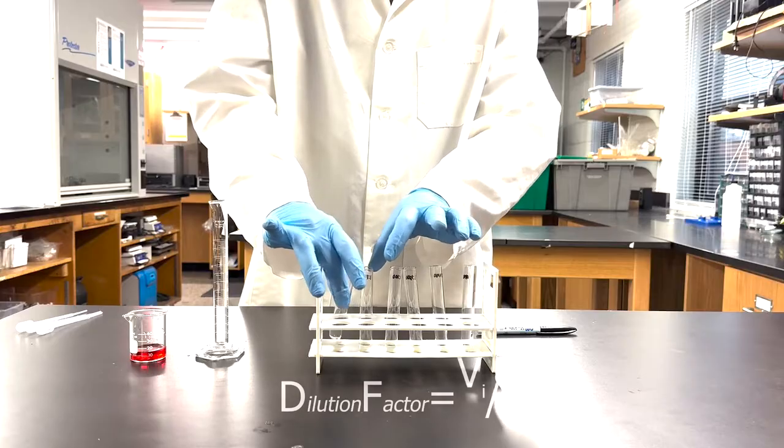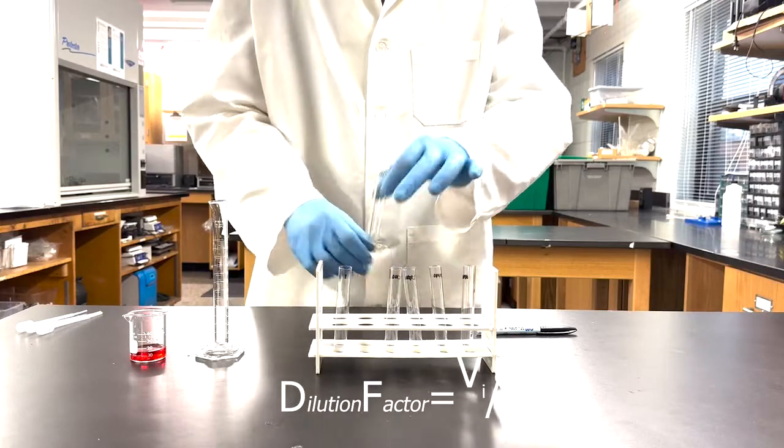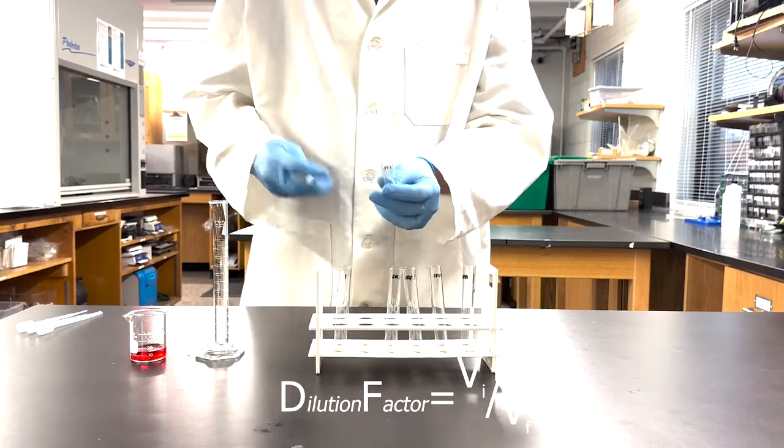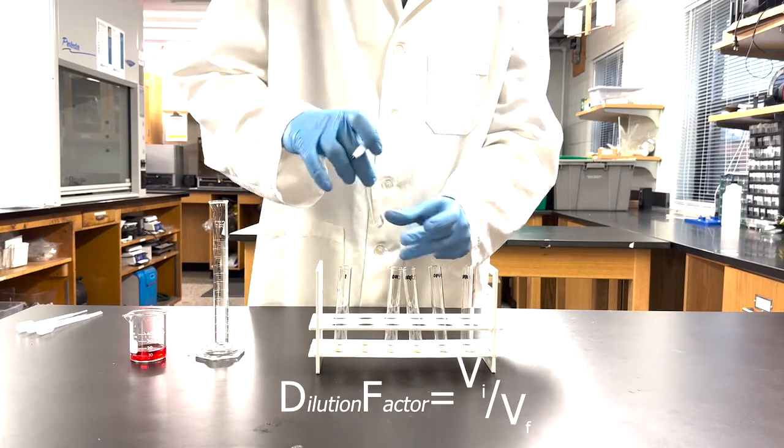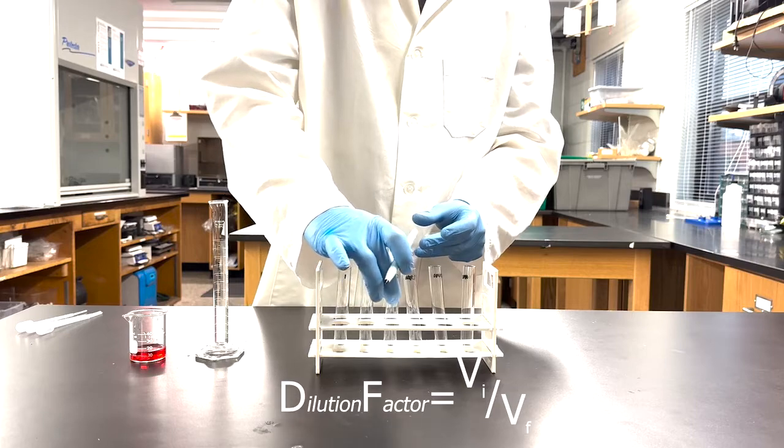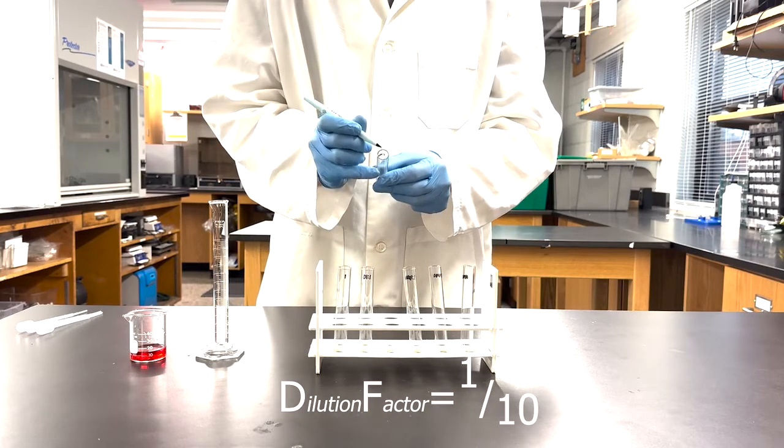The dilution factor can be expressed as a ratio of the volume of the initial solution used in the dilution to the final volume of the dilution. In the case of a 1 to 10 dilution, the dilution factor is 1 divided by 10, or 1 to 10, or 1 tenth.